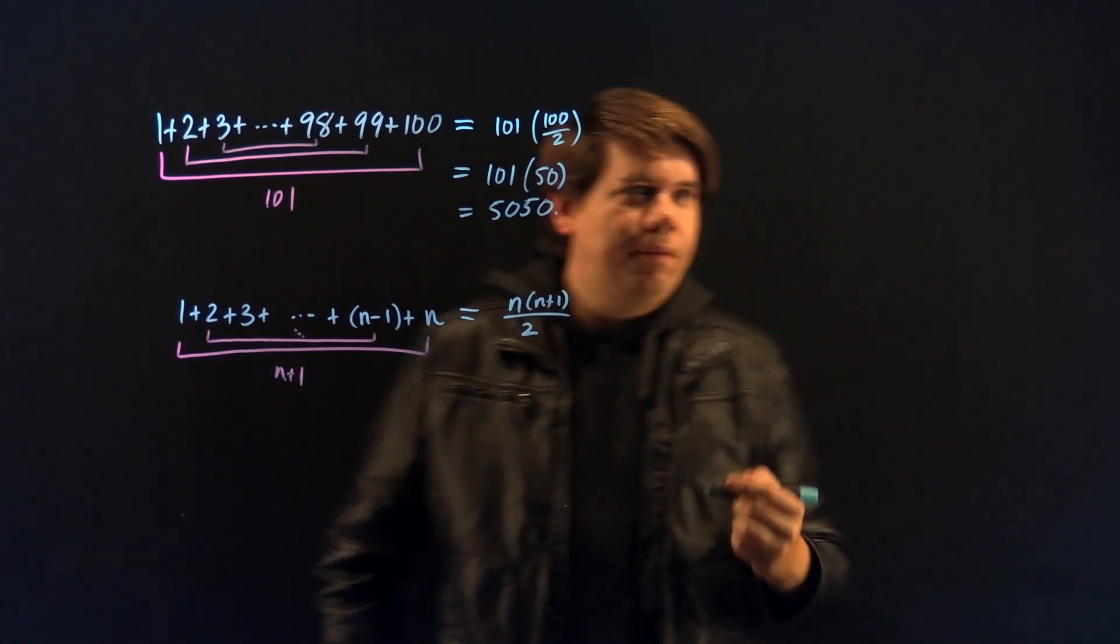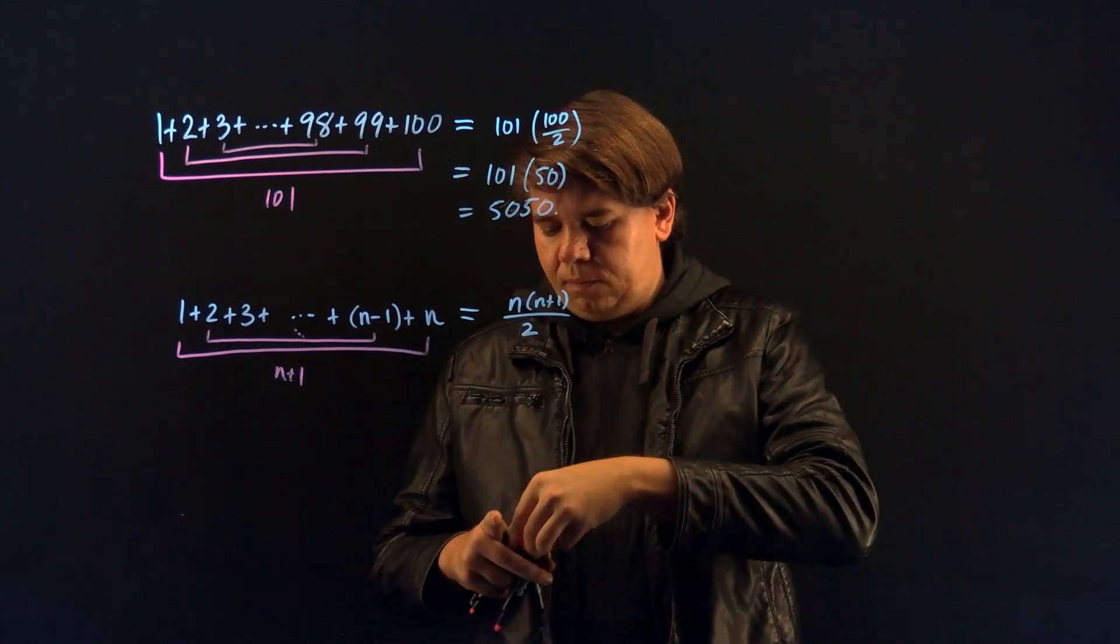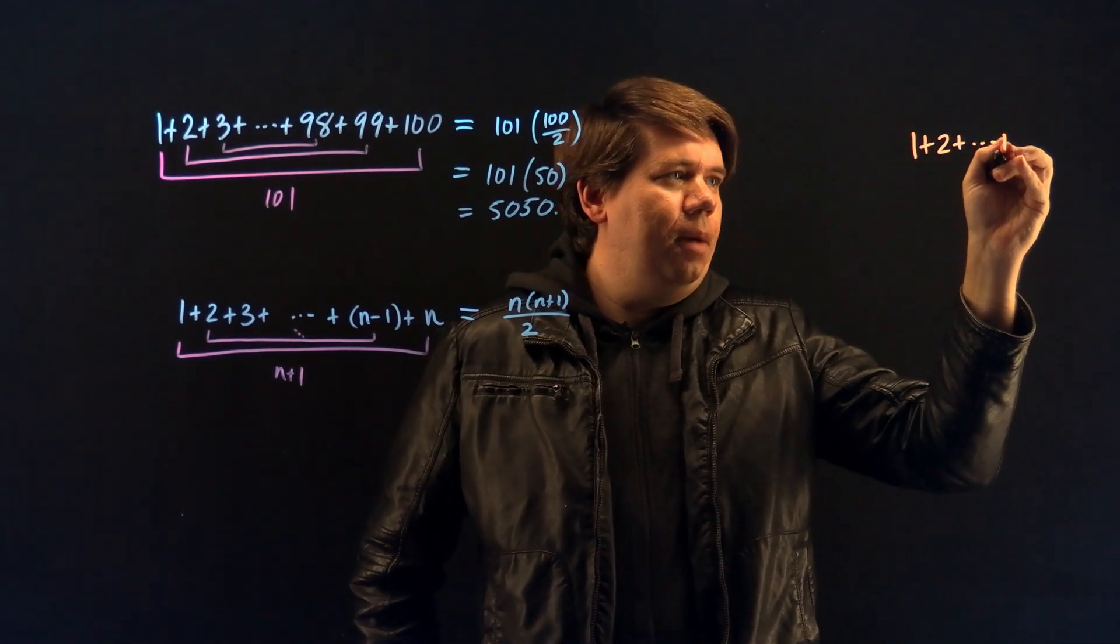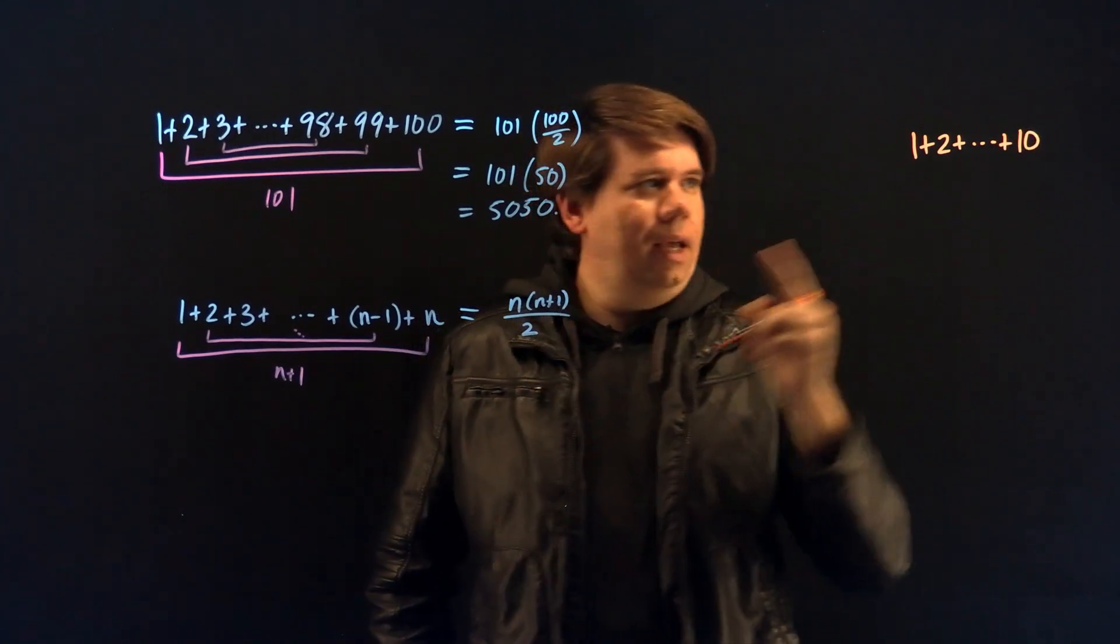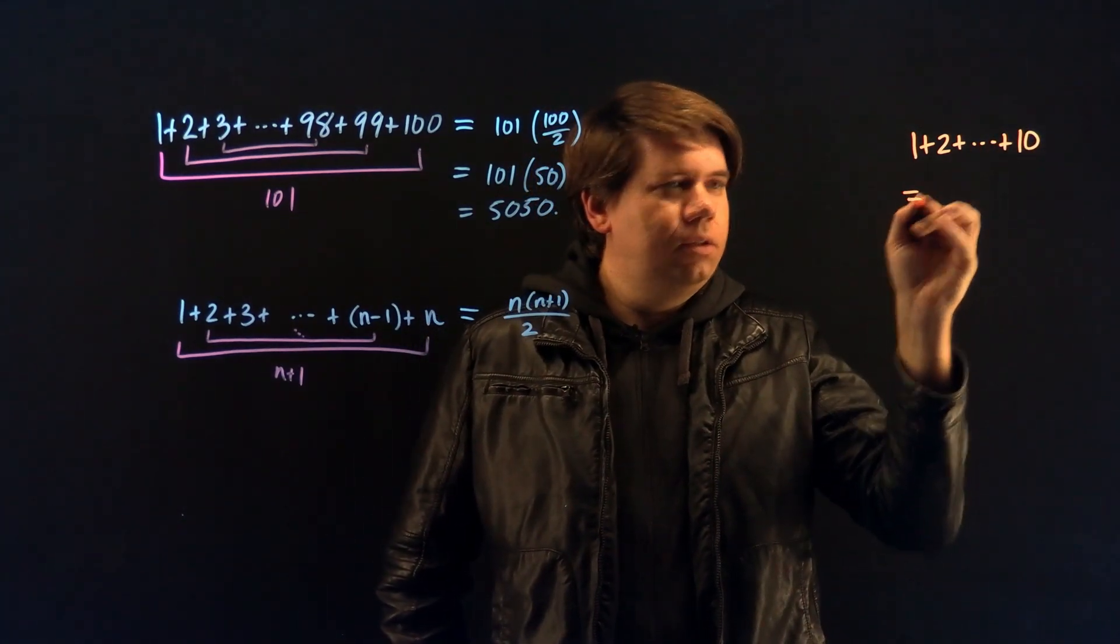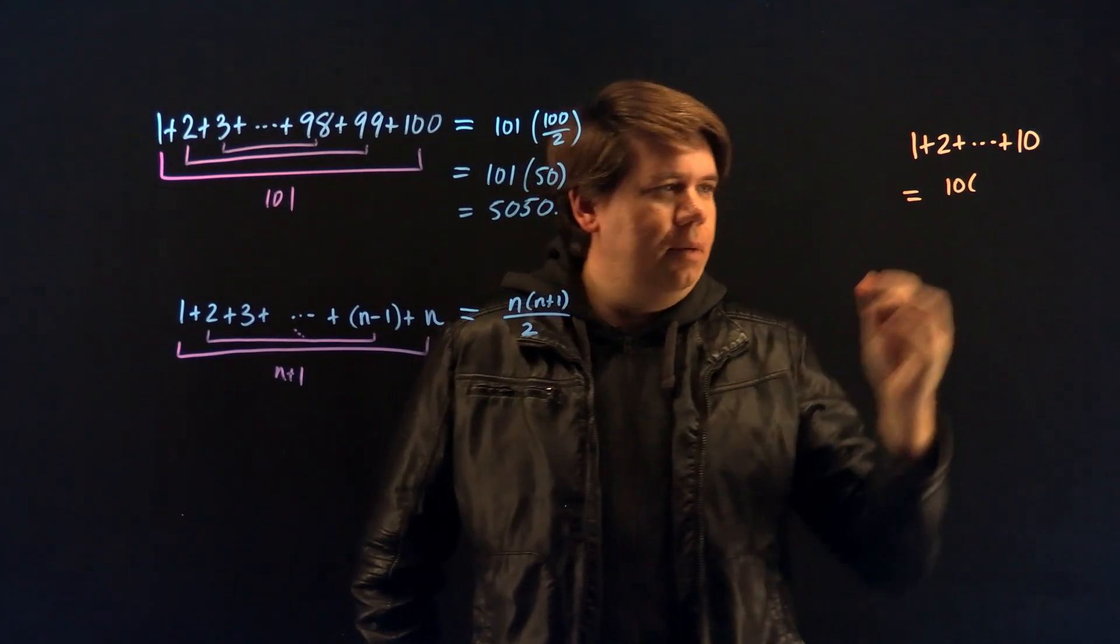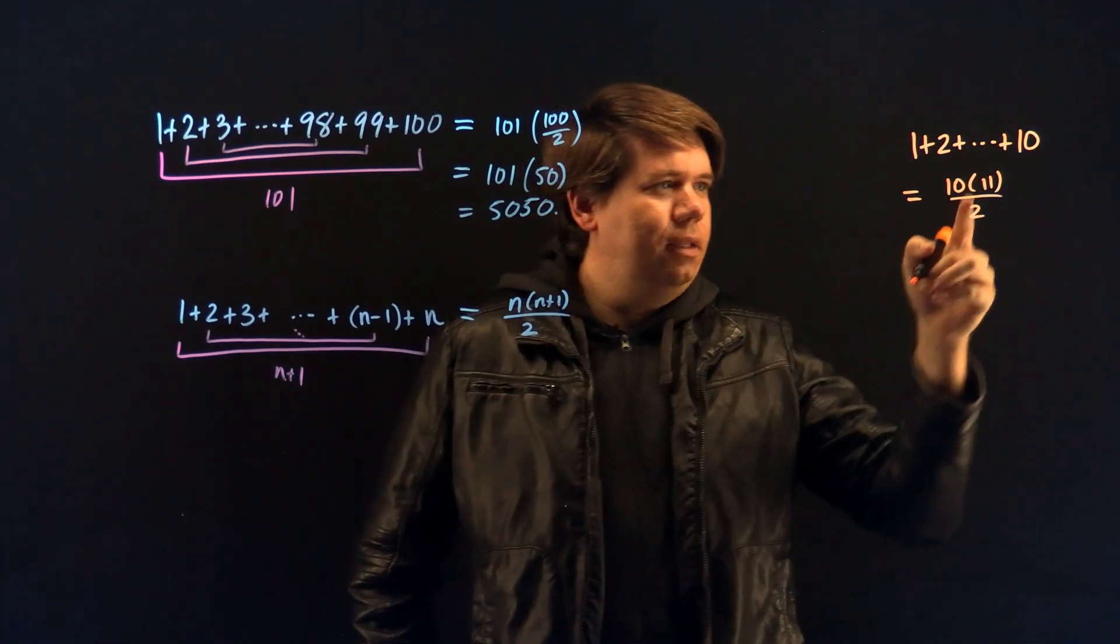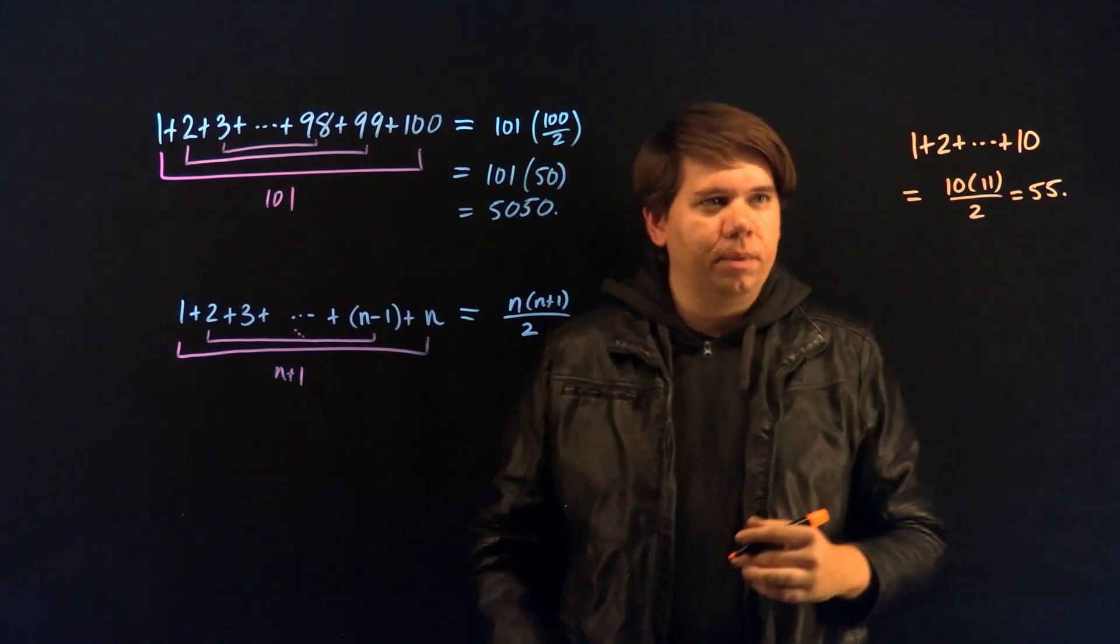For example, if I want to simply solve what is 1 plus 2 all the way up to, say, 10, then I would say, okay, I'm summing up to 10. So using my formula, I would have 10 times 10 plus 1, which is 11, divided by 2, and that ends up being 5 times 11, 55. Here's how we can use this formula.